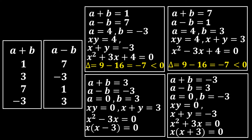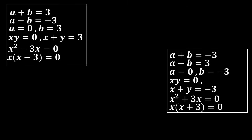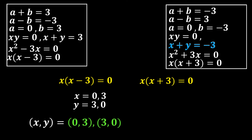The first two systems are rejected due to complex solutions; only the bottom two are accepted. From System 3, x(x - 3) = 0, so x = 0 or x = 3. Using x + y = 3: if x = 0 then y = 3; if x = 3 then y = 0. So the ordered pairs are (0, 3) and (3, 0).